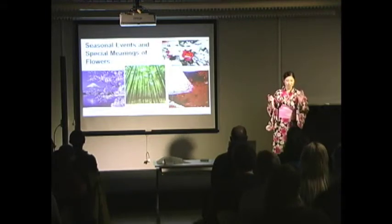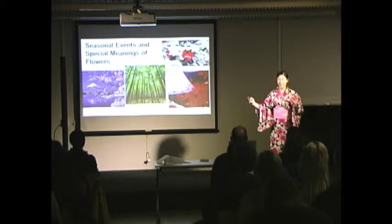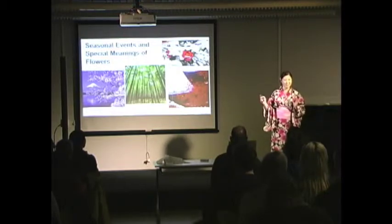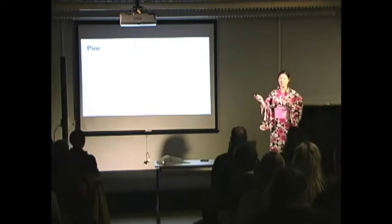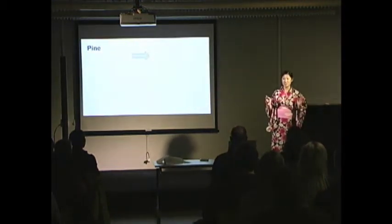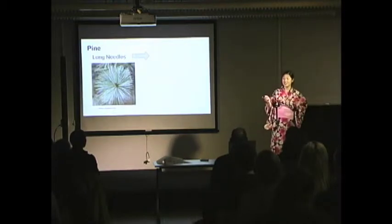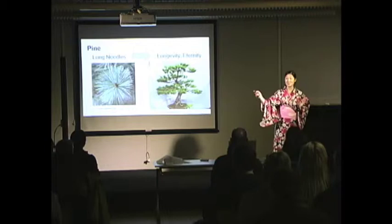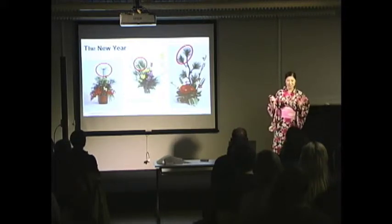Now we'll move on to seasonal events and special meanings of flowers. In Japan, there are a lot of traditional seasonal events, and each event features different kinds of flowers. Also, some flowers have special meanings. Today, I will tell you two examples of special flowers and related events. First is pine. In Spokane, there are a lot of pine trees, and as you know, pine has long needles. Japanese people think long needles connect to eternity and longevity — it means we can live as long as possible. That's why pine is used as a decoration accessory for the new year, and pine is one of the symbols of the new year.